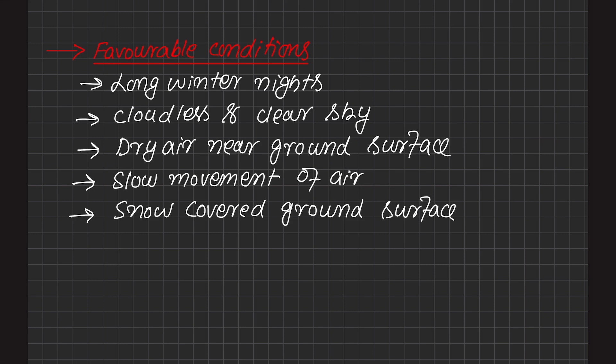The second favorable condition is a cloudless and clear sky. When there is no cloud cover and the skies are clear, there is no obstruction for the radiation emitted from the earth's surface and it easily passes to space. With no obstruction, the lower ground becomes cooler more easily, making the condition of temperature inversion more dominant.